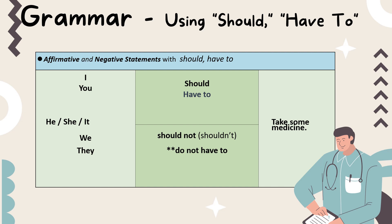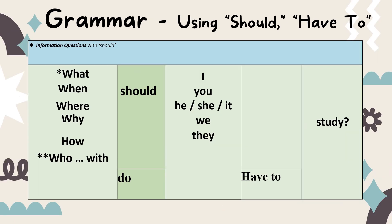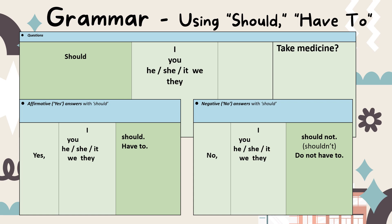여기 차트 보면 이런 식으로 문장을 만듭니다. I, you, he, she, it, we, they + should / have to. 부정어로는 should not / shouldn't, do not / don't have to. 질문을 만들 때는 what, when, where, why, how, who + should 또는 do + subject + verb. Yes/No 단답형 질문은 should + subject + verb.